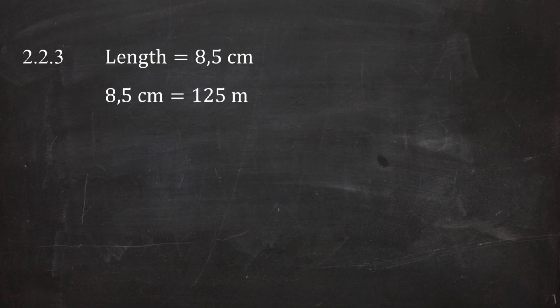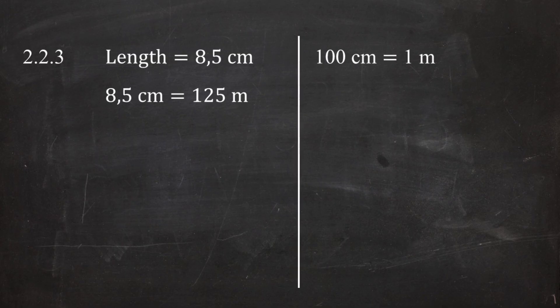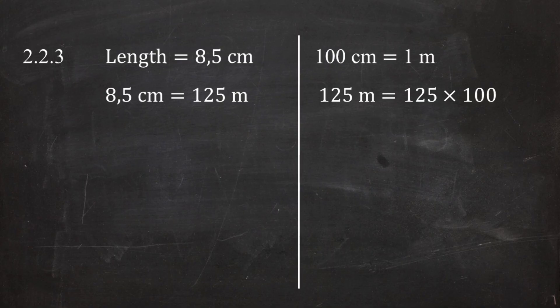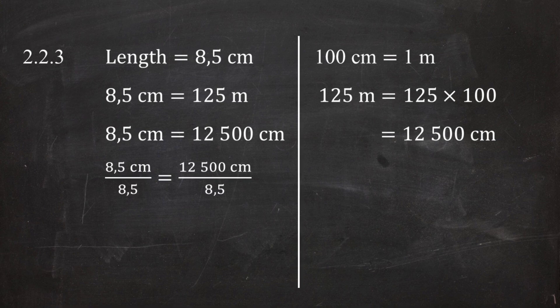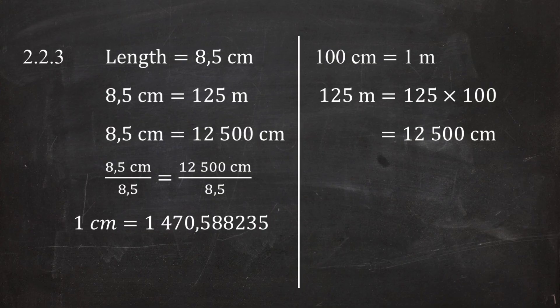Next, we convert the actual distance of 125 meters to centimeters, since the ratio scale must use the same units. There are 100 centimeters in 1 meter, so 125 meters equals 125 × 100 = 12,500 centimeters. So 8.5 centimeters on the map equals 12,500 centimeters in reality. Dividing both sides by 8.5, we get a scale of 1 cm = 1,470.59 centimeters. Rounding to the nearest hundred, we get a scale of 1 to 1,500.